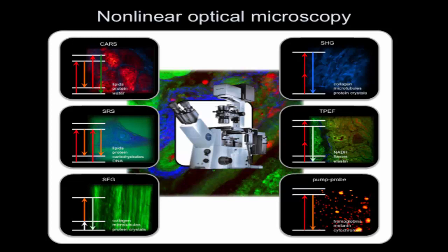What kinds of nonlinearities do people use? Here's a microscope - if you send lasers in and focus to a small spot, a whole bunch of nonlinearities happen. If you send in two pulsed laser beams, you'll generate CARS. Changing the detection a little, you get stimulated Raman scattering. There's sum frequency generation microscopy and second harmonic generation microscopy, both sensitive to non-centrosymmetries. Two-photon excitation microscopy detected through fluorescence. You can also do pump-probe microscopy. All these processes depend nonlinearly on the incoming light.